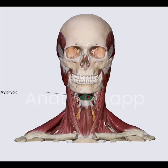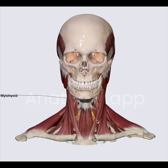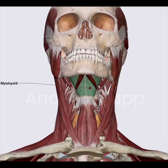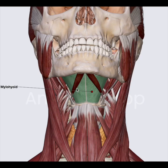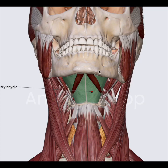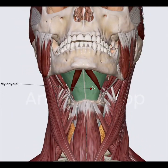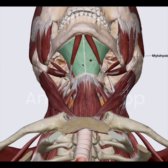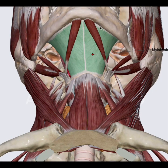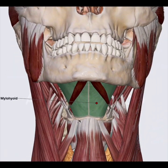The next muscle is the mylohyoid — you can see it here, the green structure. It's like a sheet and it actually covers the majority of the floor of the mouth. Underneath the tongue you will have this muscle covering that area. The mylohyoid arises from the mylohyoid line, which is on the inner surface of the mandible, and it inserts on the mylohyoid raphe and the superior aspect of the body of the hyoid bone. When it contracts, it will lift the hyoid up; if the hyoid is stable and it contracts, the jaw will open.